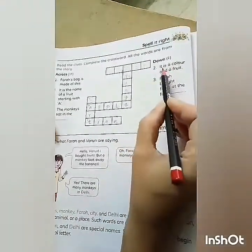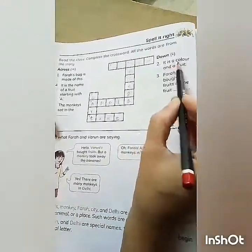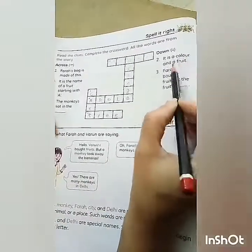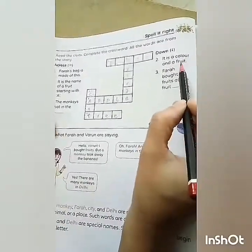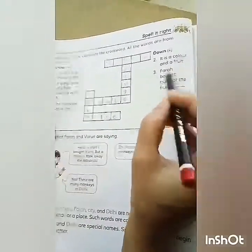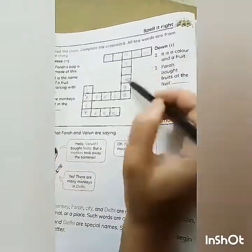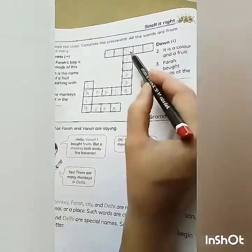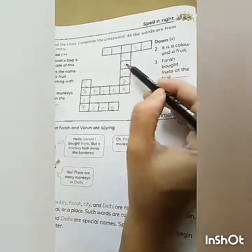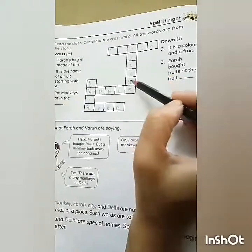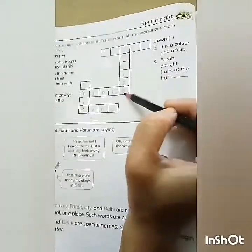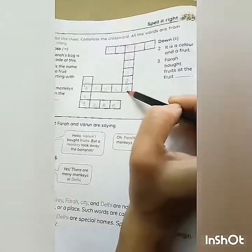Down, we will see. It is a color and a fruit. So what is that? Orange. O-R-A-N-G-E. Orange.